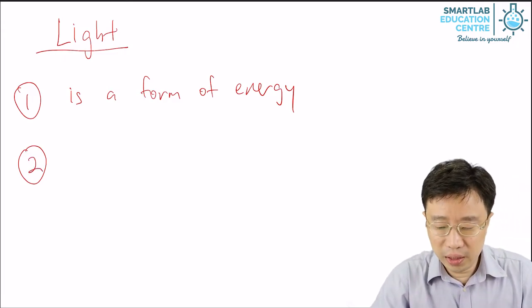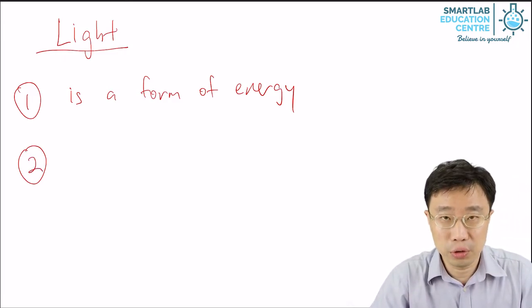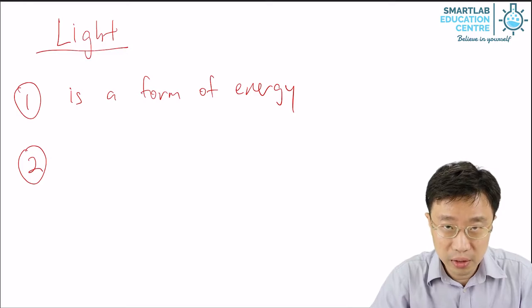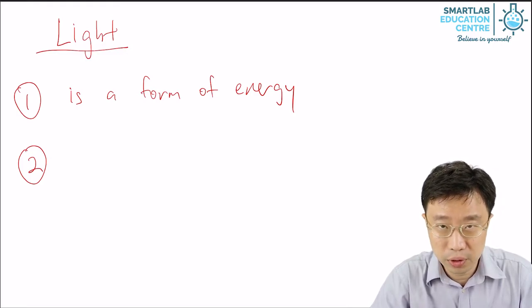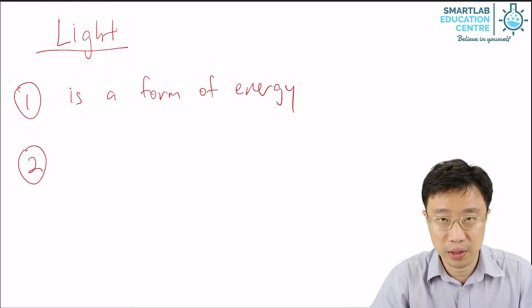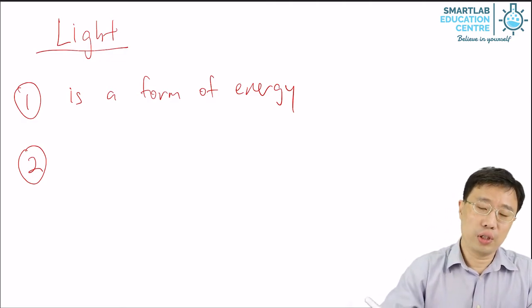Now, for sunlight, which is a form of light to fall on you, it comes from the sun to the earth and falls on you. It must be able to travel. So how does light travel?